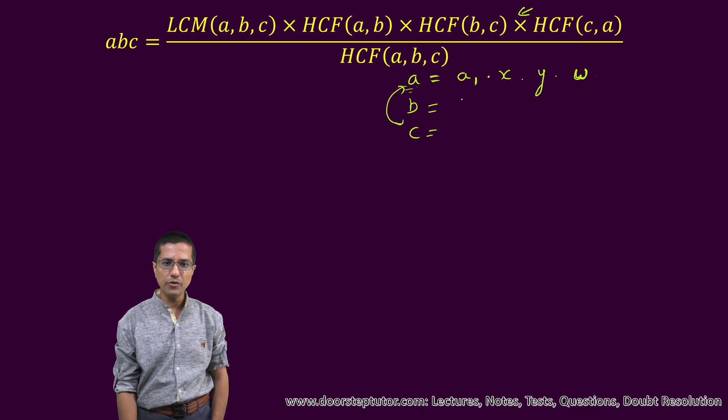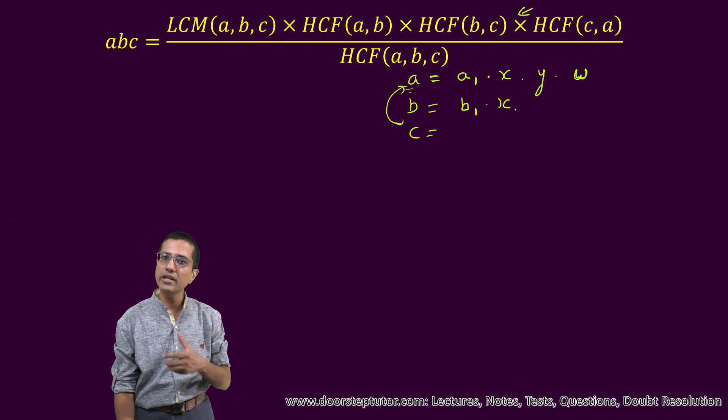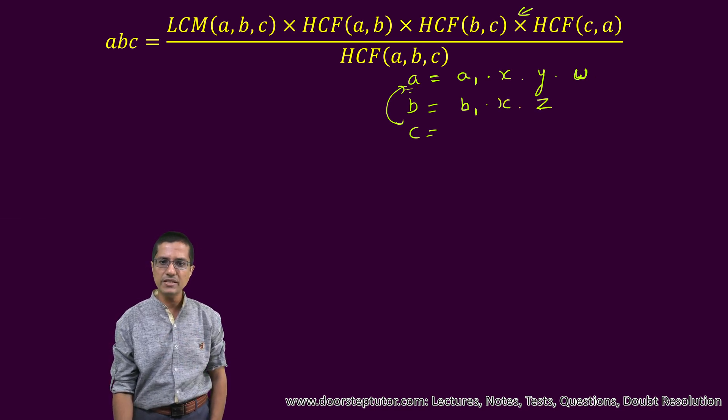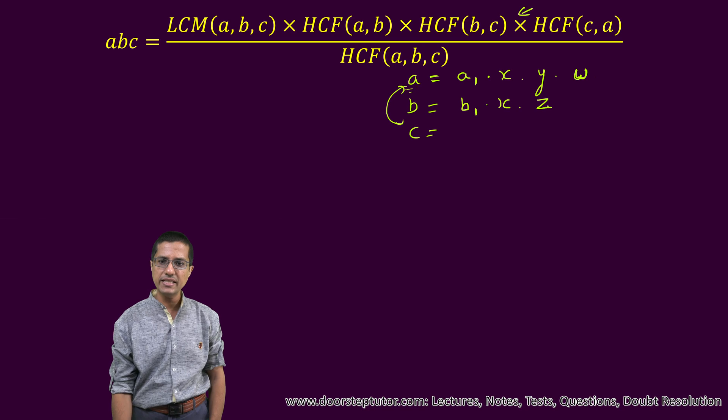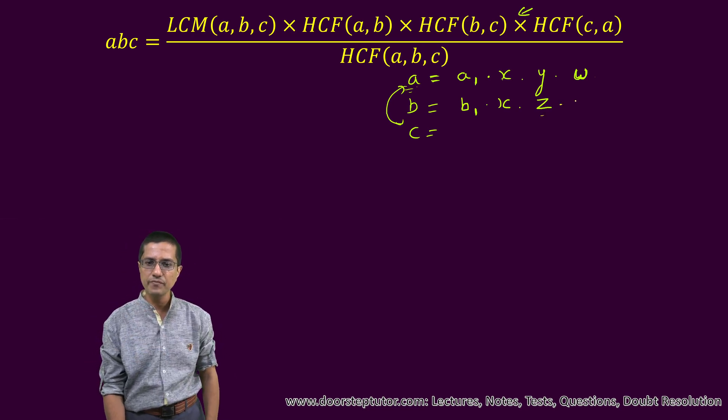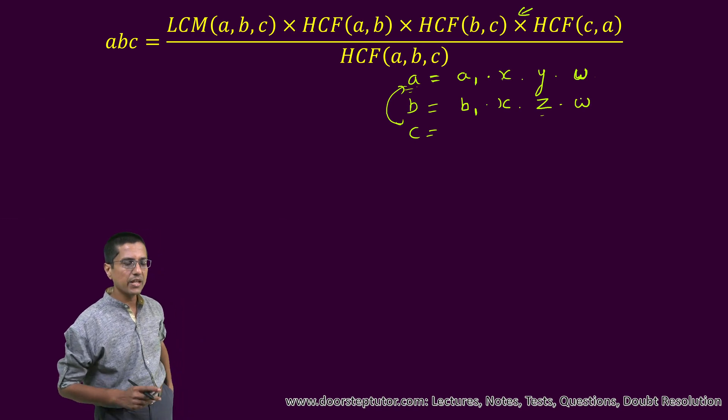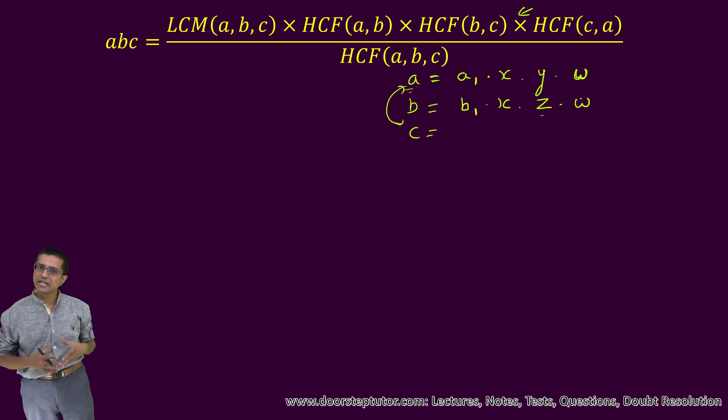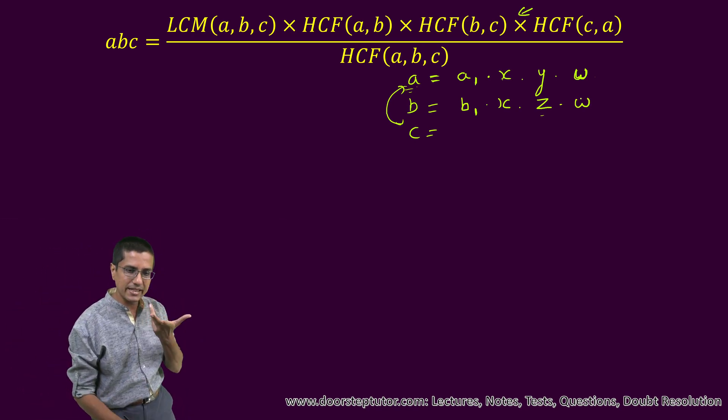Similarly, the factors for B: there will be some which are unique to B. And of course, there are some factors which are common to A and B which we've already called X. Then there will be some factors common to B and C whose product we are calling Z. And then W are all the factors which are common between A, B and C, so those would appear in the case of B also.